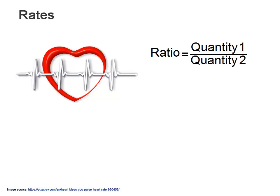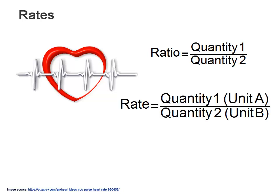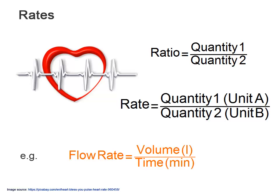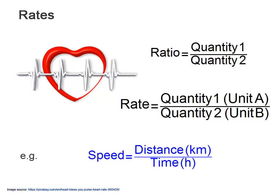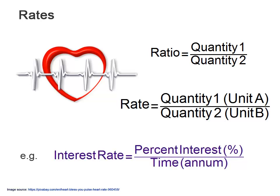A ratio is a relationship between like quantities or variables. Rates are a special type of ratio. It's a way to compare two variables with different units.